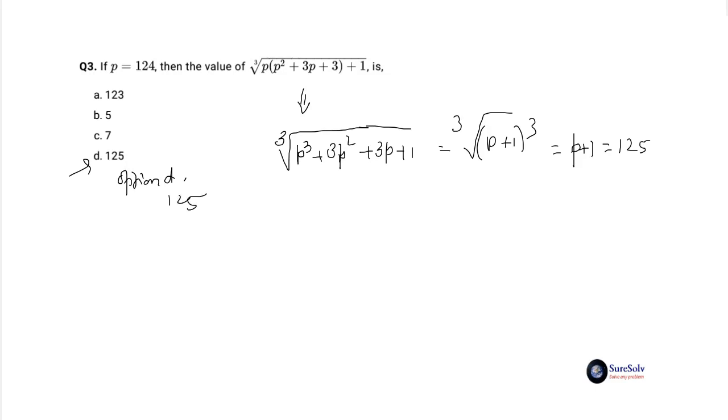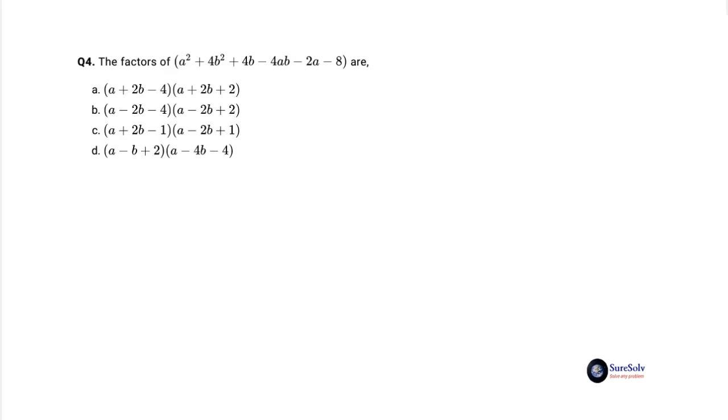Let's solve the fourth problem. Question 4 is: the factors of a square plus 4b square plus 4b minus 4ab minus 2a minus 8 are. Each of the options is a product of two factors. For option a, the factors are a plus 2b minus 4 multiplied by a plus 2b plus 2.